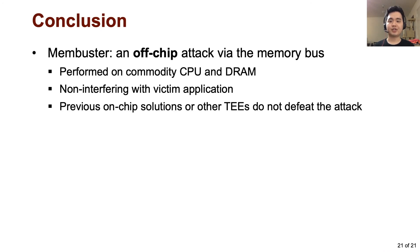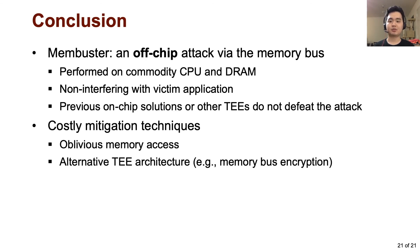To conclude, we demonstrated Membuster, an off-chip side-channel attack using an unencrypted memory address bus, performed on commodity CPU and DRAM. Since the attack does not cause any visible interference to the victim, there is no easy way to detect it. Previous mitigation techniques or TEEs based on resource partitioning cannot defeat the attack. The mitigations we foresee are oblivious memory or an entirely new architecture, both of which are expensive in terms of performance or hardware costs.